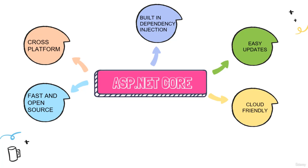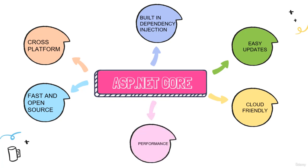.NET Core is also cloud friendly. When .NET Core was being written, cloud architecture was kept in mind, and because of that it is completely compatible with all of the cloud components. Lastly, when it comes to performance, .NET Core exceeds all of the previous versions, and even the new versions in .NET Core that are being released supersede the previous version. The code actually gets more optimized, which results in improved performance.